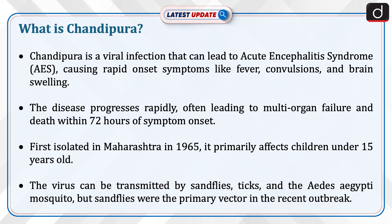Now let's discuss what is Chandipura. Chandipura is a viral infection that can lead to acute encephalitis syndrome, causing rapid onset symptoms like fever, convulsions and brain swelling. The disease progresses rapidly, often leading to multi-organ failure and death within 72 hours of symptom onset. First isolated in Maharashtra in 1965, it primarily affects children under 15 years old. The virus can be transmitted by sand flies, ticks, and the Aedes aegypti mosquito.